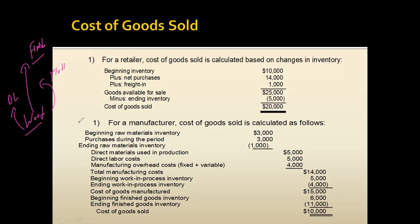Partly completed goods are considered work in process inventory. For example, in a furniture company at the end of the month a few tables or chairs may be structurally ready but not yet polished — these fall under work in process. Tables or chairs that are ready for shipping to customers are defined as finished goods. Wood held to fulfill future orders comes under raw material.